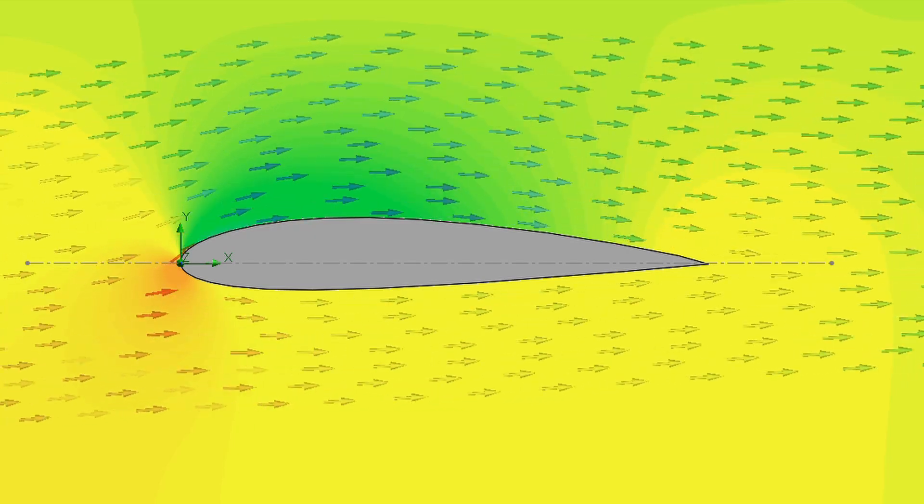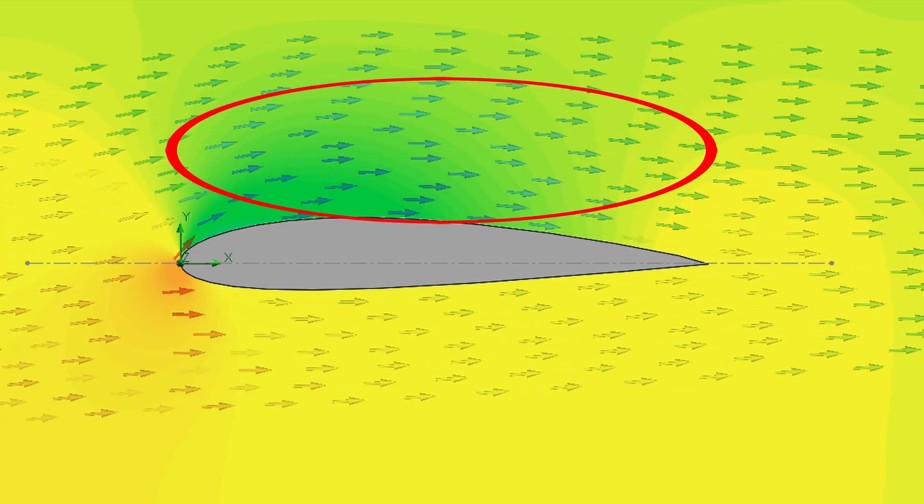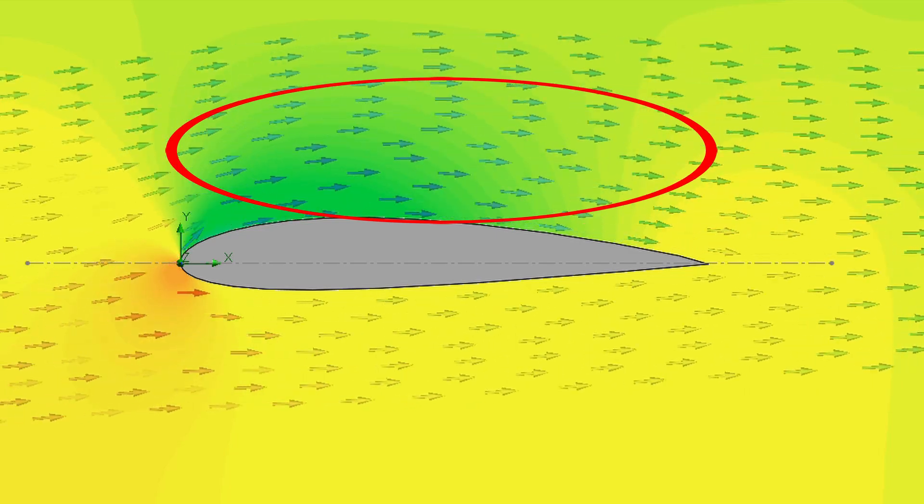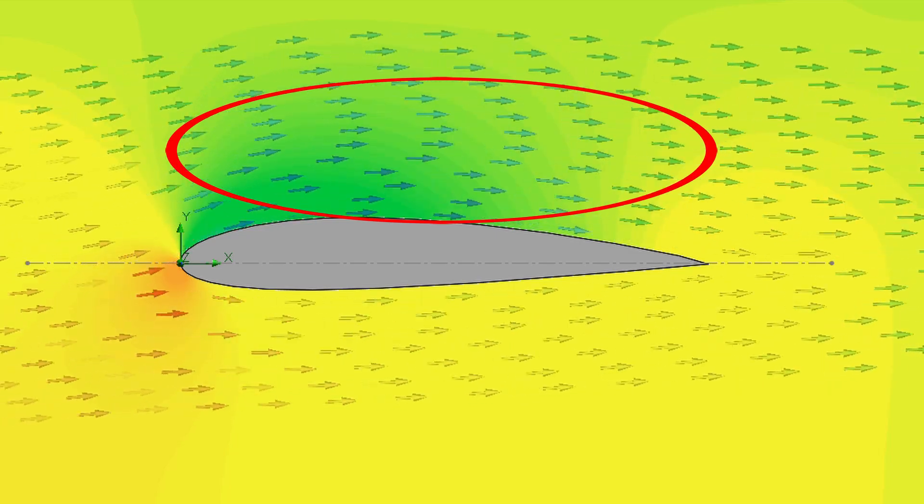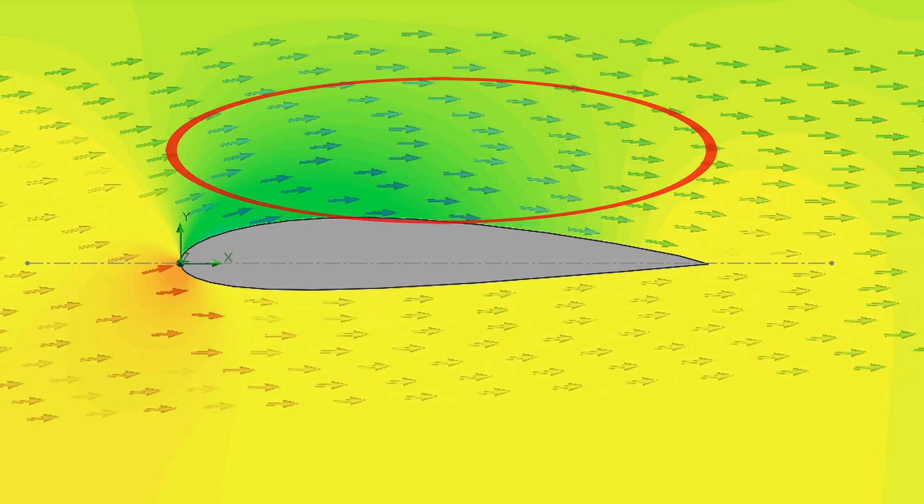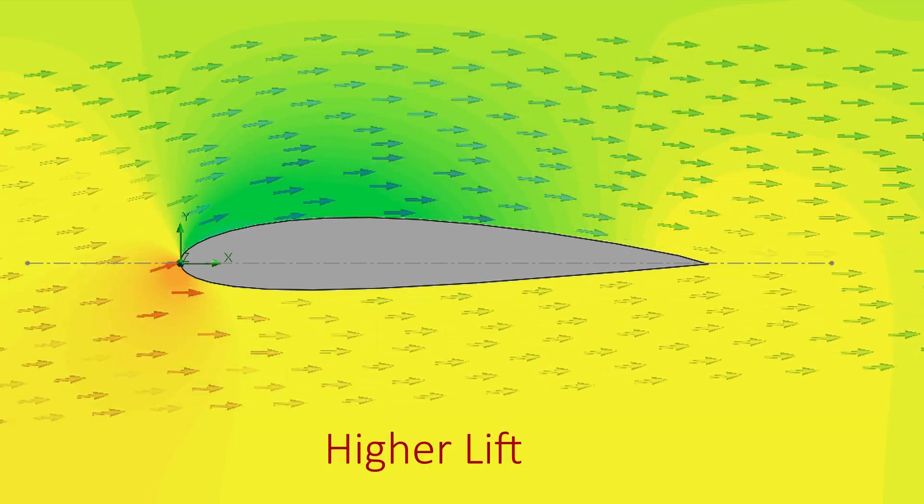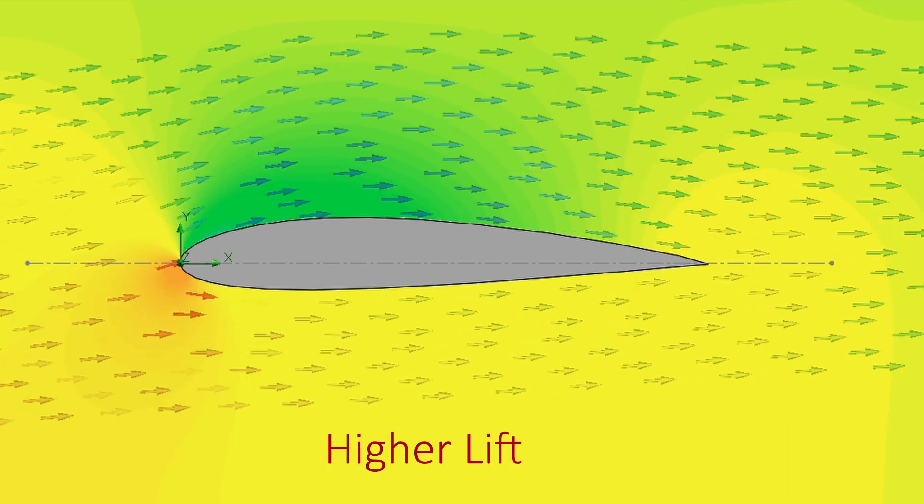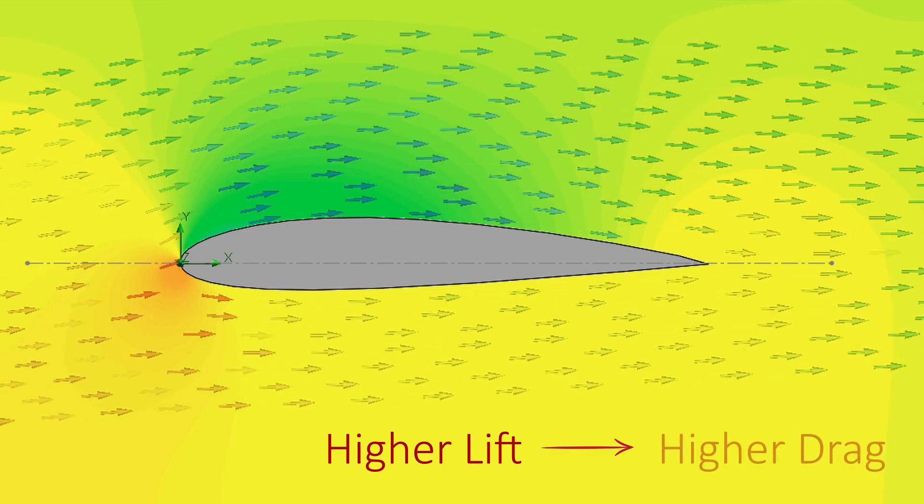We can see that the velocity in this area is much higher than the previous one, giving us a lower pressure and so higher lift. The disadvantage is that it will also produce higher drag.